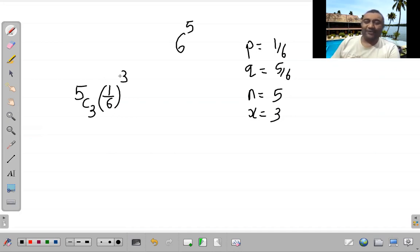Now the rest will be 2 dice. There will not be 6. So how much is the probability? 5 by 6. Look, I am purely using permutation and combination methods. So see, this is the probability of getting 3 successes.